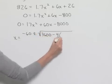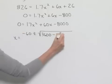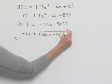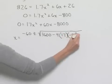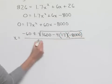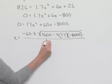Minus 4 times our A value of 17 times our C value of negative 8,000, and that is being divided by 2 times our A value of 17.